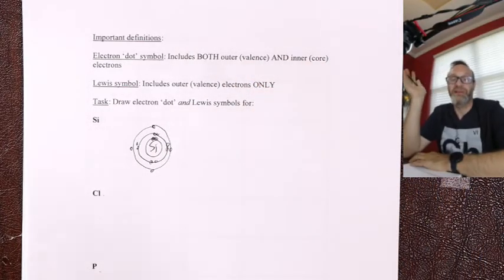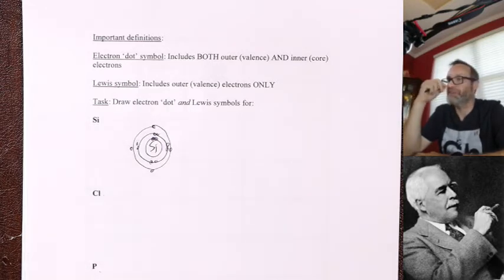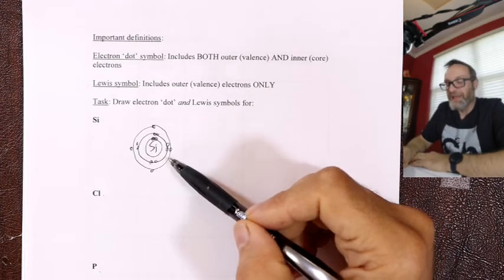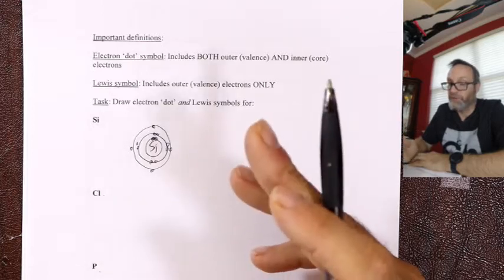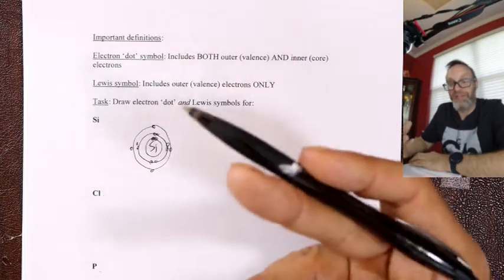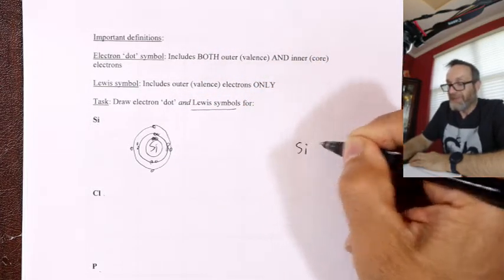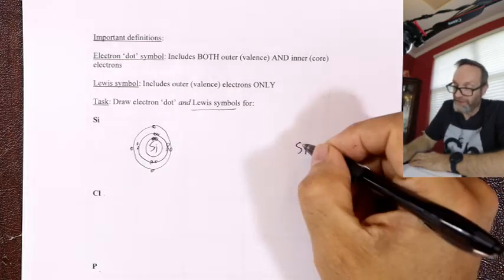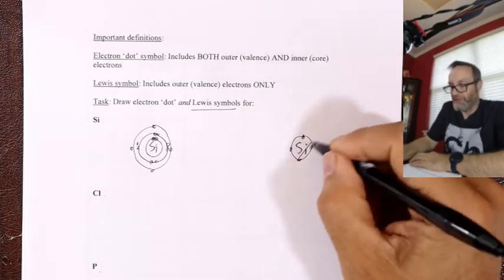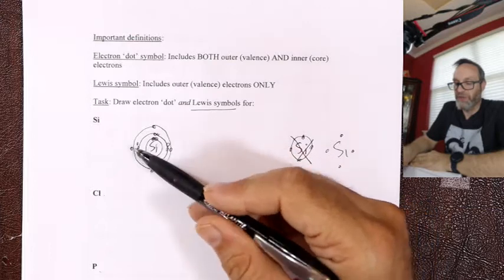Once in a couple of generations, someone comes along who turns the science on its head. For chemistry, it was G. N. Lewis — kind of like a cross between Winston Churchill and Colonel Sanders. Lewis came along and said these dot diagrams are great, but they're not really useful because only the outside electrons are important. So a Lewis symbol is just the outside electrons. Anything in the same column will have the same Lewis symbol because the number of outside electrons equals the column number. Silicon has four on the outside.